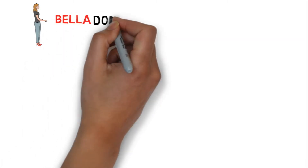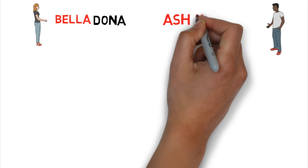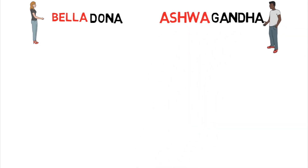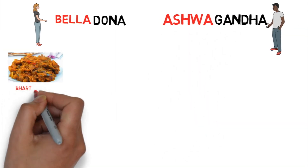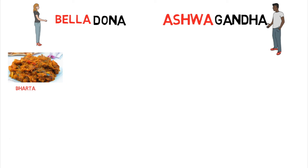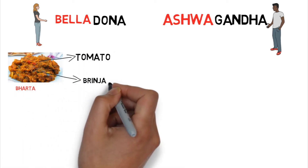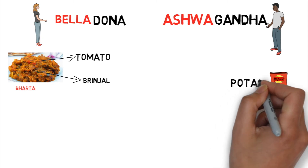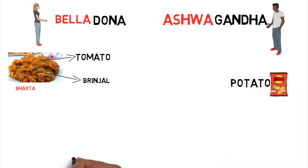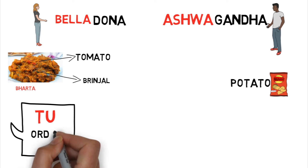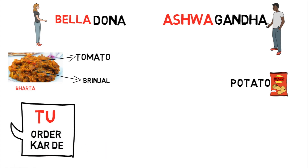Bela implies Beladona. Ashwa implies Ashwagandha. Bharta is made up of brinjal and tomato. Potato chips implies potato. Tu (order kar de) implies tobacco.